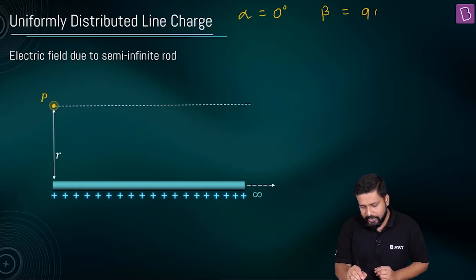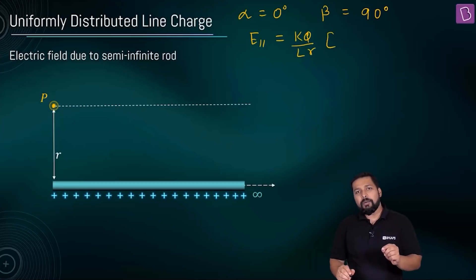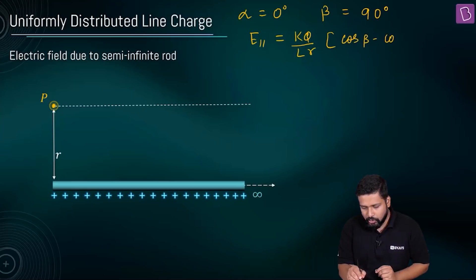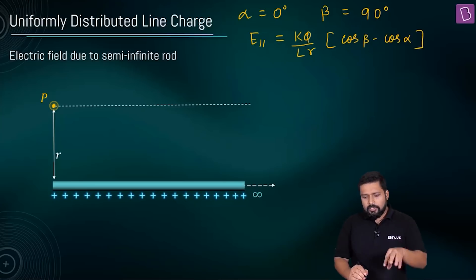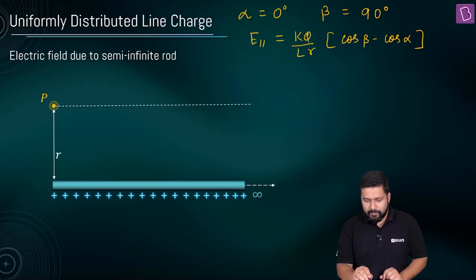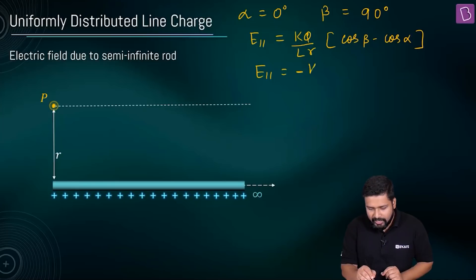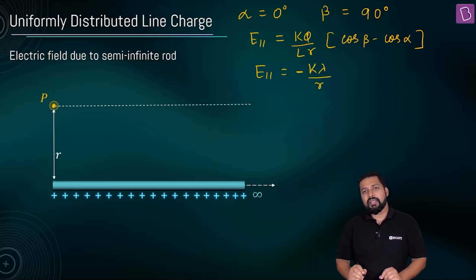The expression we knew is: E_parallel, the parallel component of the electric field, equals kq/lr times (cos β − cos α). Now substituting the values of alpha and beta — cos(0°) equals 1, so that gives minus one, and cos(90°) equals zero. So E_parallel equals minus kλ/r, where q/l is written as lambda.